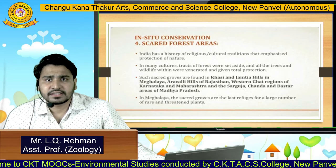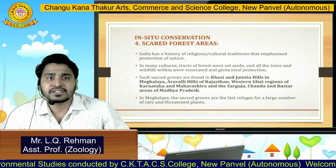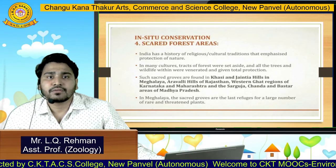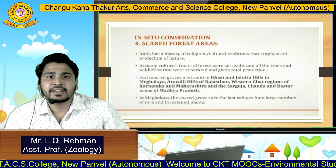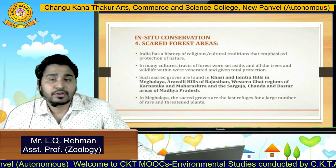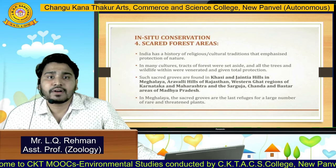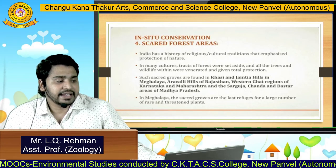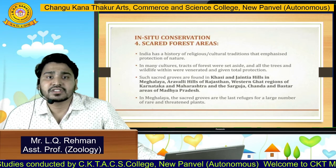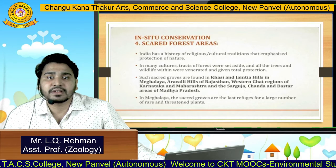Next is the sacred forest area. India has a history of religious and cultural traditions that emphasize protection of nature. In many cultures, tracts of forest were set aside and all the trees and wildlife within were given total protection. Such sacred groves are found in the Khasi and Jaintia hills in Meghalaya, Aravalli hills of Rajasthan, Western Ghats regions of Karnataka and Maharashtra, and in the Sarguja, Chanda, and Bastar areas of Madhya Pradesh.